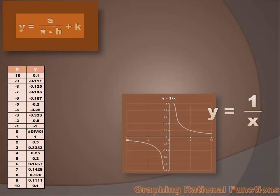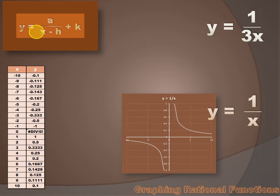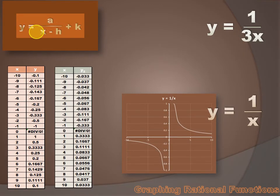Let's look at how changes in the parent function would impact the graph. First, let's look at the coefficient of x. In the parent function, the coefficient of x is 1. But what if the coefficient of x were 3? What if y equaled 1 over 3x? How would that change the graph? Well, we could create a table of x values and y values, and when we did, we'd notice a couple of things.